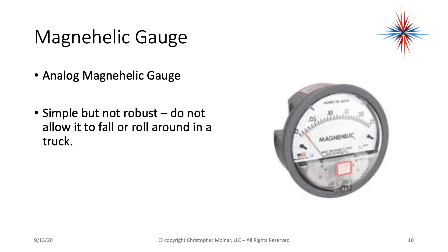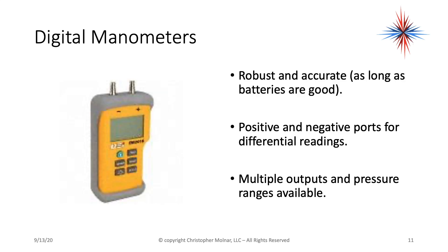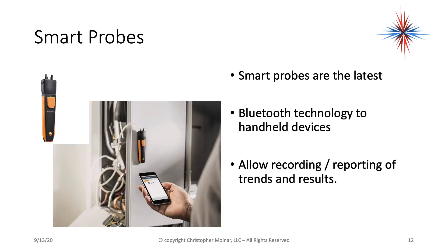A magnehelic gauge is a simple dial gauge — not robust, so don't let it fall or roll around in a truck — but it is by far the most accurate method of taking pressure readings as long as it hasn't been dropped. Digital manometers are robust and accurate as long as the batteries are good; weak batteries will give bad readings. They have positive and negative ports for differential readings and multiple pressure ranges. Smart probes are the latest technology, using Bluetooth to connect to a handheld device and allowing recording and reporting of trends and results.